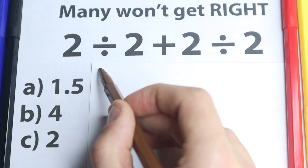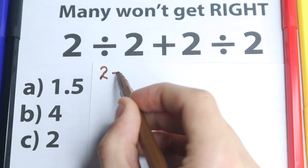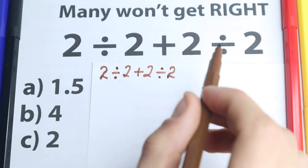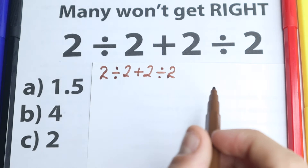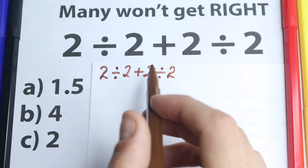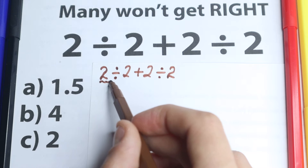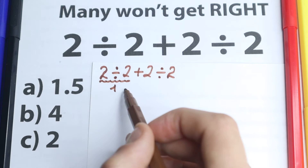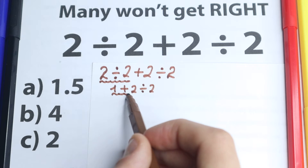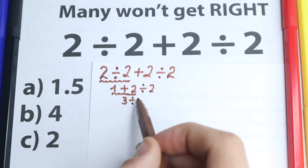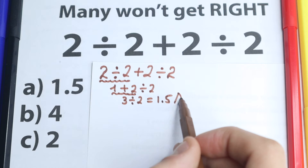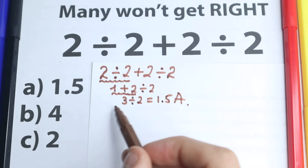First of all I want to start with this solution. So we have our question right here, so I rewrite it on this paper — we have 2 divided by 2 plus 2 divided by 2. One part of students solves it like that: they say okay we have a complicated expression so let's try to go from left to right. So we have 2 divided by 2, we get 1, and we still have 1 plus 2 divided by 2. Solving from left to right: 1 plus 2 equals 3, and 3 divided by 2 equals 1.5. We have this option — this is option A. But here is our main question: is this correct or not correct?